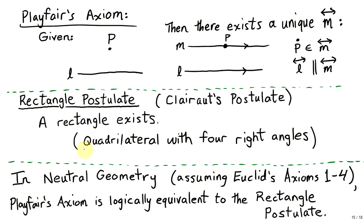By rectangle, we of course mean a quadrilateral with four right angles. We don't need to assume any other properties, such as opposite sides being parallel to each other, or opposite sides being of equal length. All we know is we have a convex quadrilateral with four right angles.